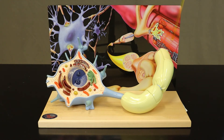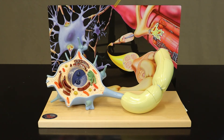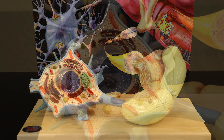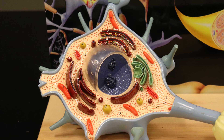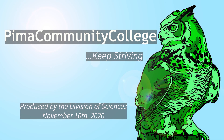What we're looking at here is a skeletal muscle cell. Remember, skeletal muscle cells are extremely long and skinny, so we're only looking at a very small portion of one cell. You can see the skeletal muscle cell here in the model.